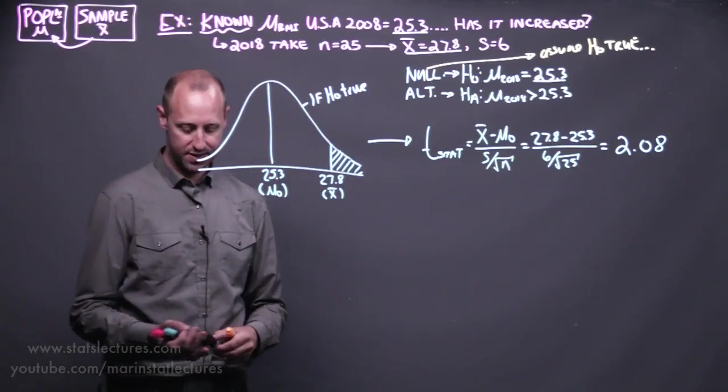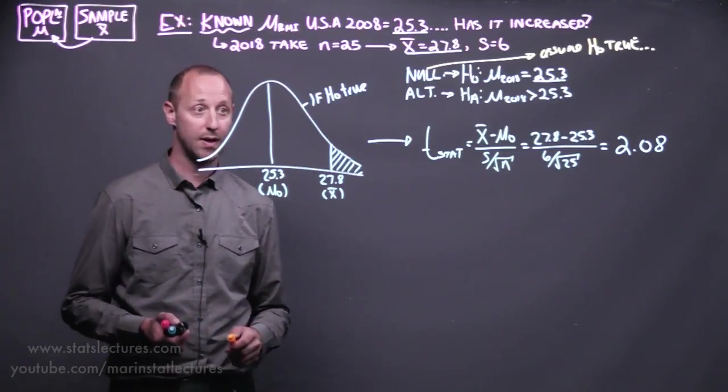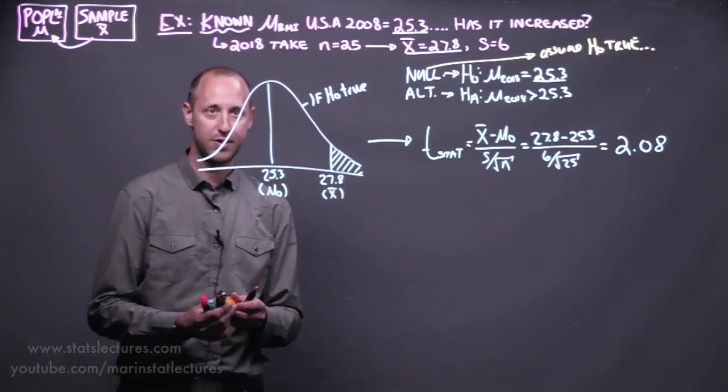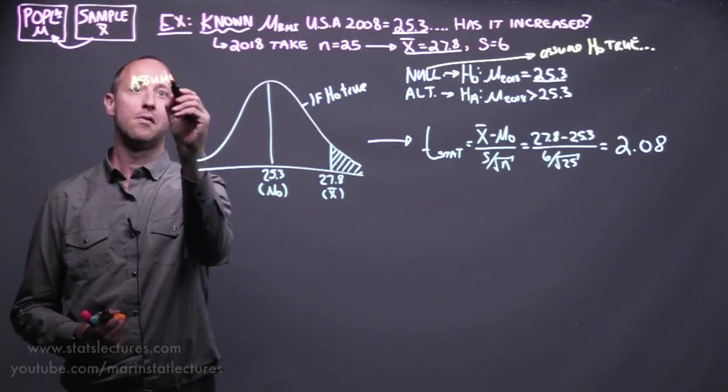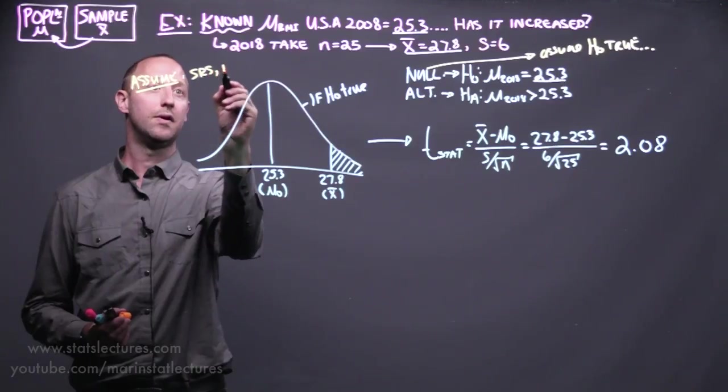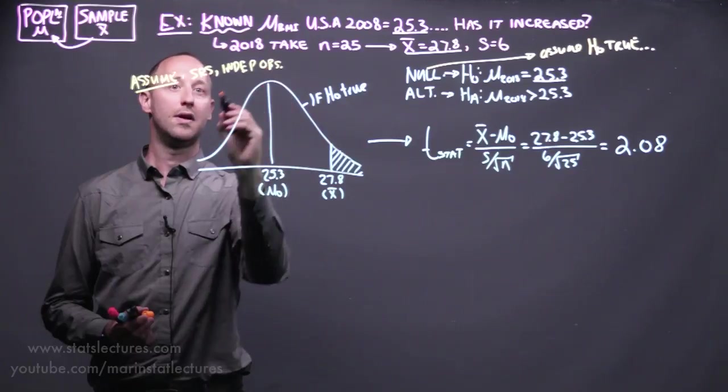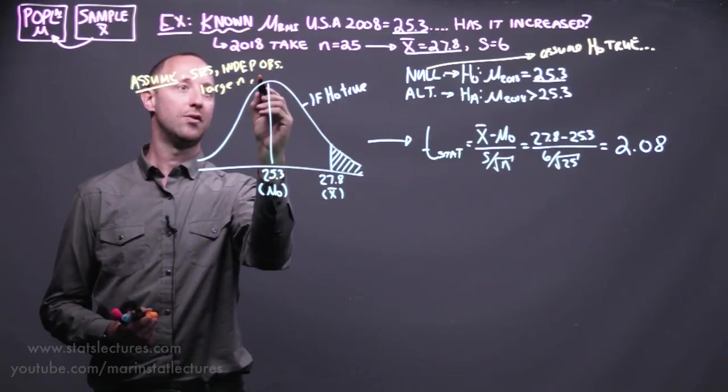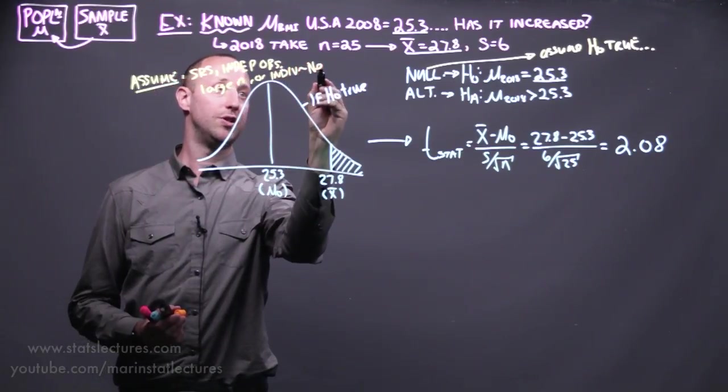And in order to do this test, we need to make essentially the same set of assumptions that we made when constructing confidence intervals. So let's just put those down briefly. To do this, we're going to assume we have a simple random sample, independent observations, and we have a large sample size, or the individuals are approximately normally distributed.